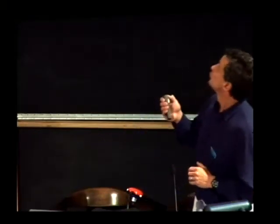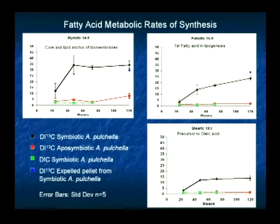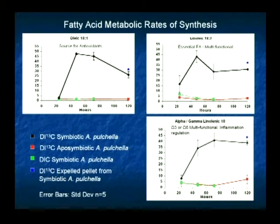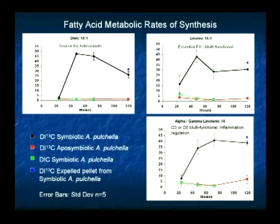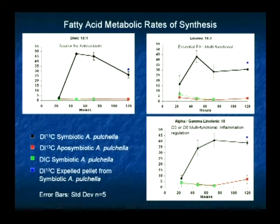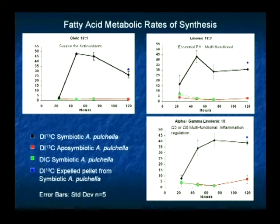The first fatty acid in lipogenesis is palmitic acid — you can see it's pretty much linear, so there's a linear incorporation in those primary fatty acids. Stearic acid is the next one, which plateaus off and potentially is then being incorporated into another in terms of the lipogenesis chain. Oleic acid is the next one along, which has a potential source for antioxidants, so there may be some functional significance there for the symbiosis. And then the essential fatty acids — we need essential fatty acids, we can't synthesise certain fatty acids important to our metabolism and have to obtain them from plants. In this case, the microalgae or the dinoflagellate algae are potentially producing those, which may be important to nutrition and the well-being of the symbiosis.